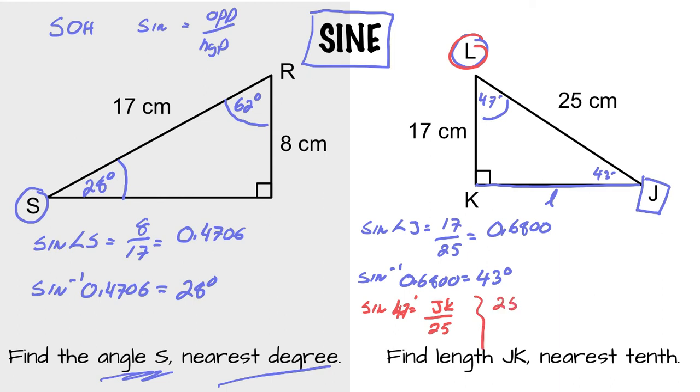So sine 47 equals JK over 25. So cross multiply.